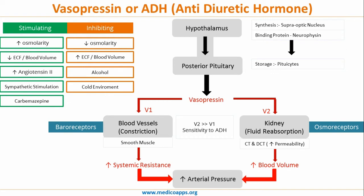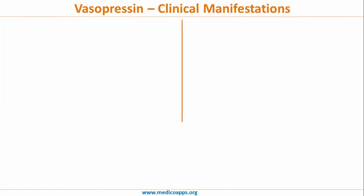To recap: production happens in the hypothalamus, specifically in the supraoptic nucleus. From there, with the help of binding protein neurophysin, it is moved and stored in the posterior pituitary. It is then released into the circulation. V2 receptors are much more sensitive to ADH, causing fluid reabsorption at the collecting tubule and distal convoluted tubule, increasing blood volume. V1 receptors cause smooth muscle and blood vessel constriction, increasing systemic resistance and arterial pressure.